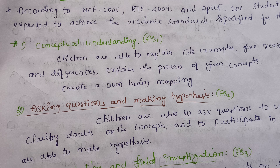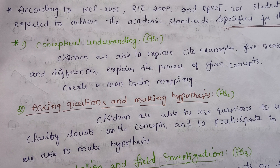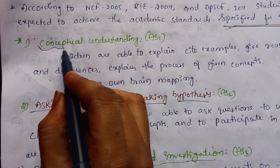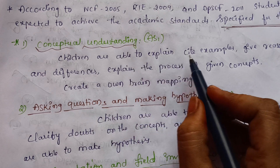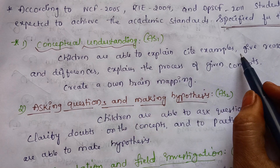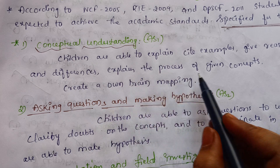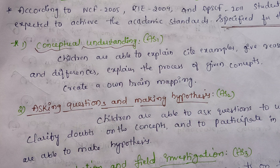This is conceptual understanding — that is academic standard 1. Under conceptual understanding, children are able to explain, cite examples, give reasons, comparison and differentiation, explain the process of a given concept, and create their own brain mapping.